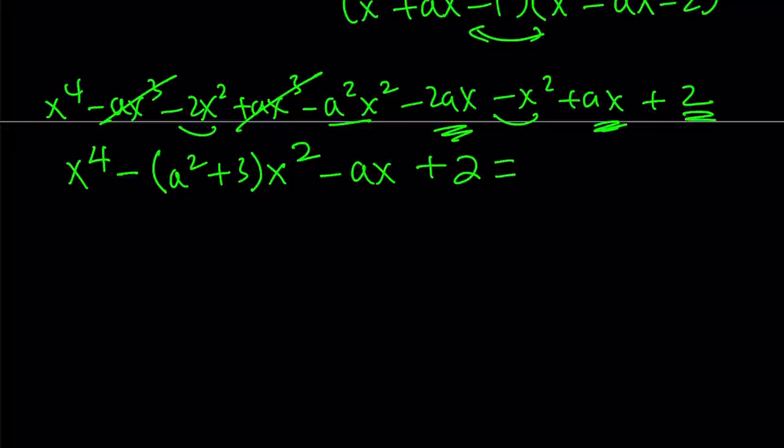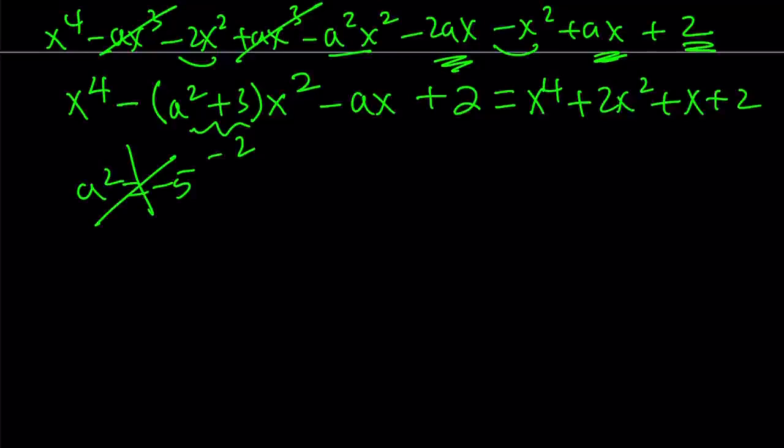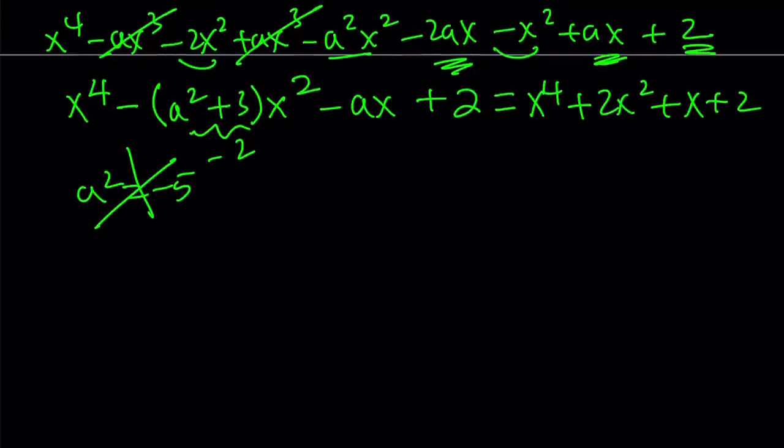And I have to set this, obviously, equal to my original expression. And from here, to keep a long story short, you want this to be negative 2, which implies that a squared equals negative 5. Obviously, that's not going to work because we're looking for a real number. I mean, integer even like a more specific case. So, this option is not going to work. Therefore, we have to go with the other one.